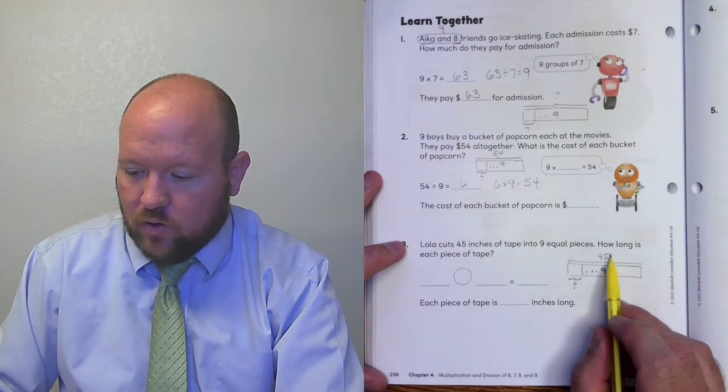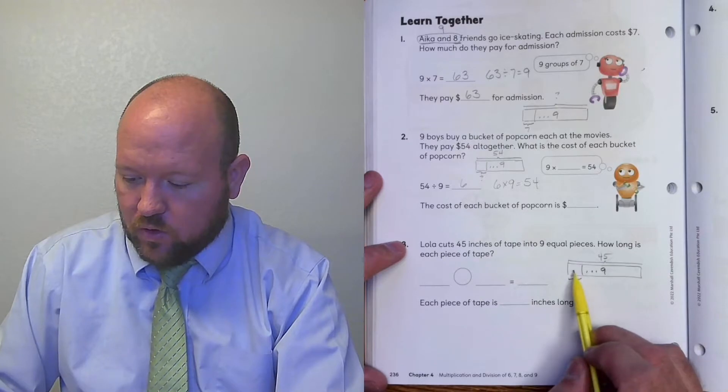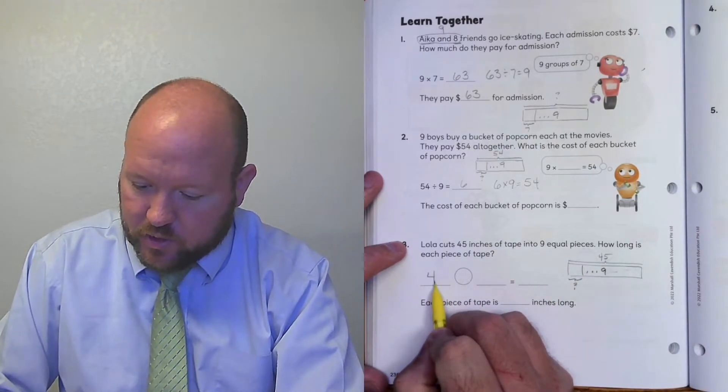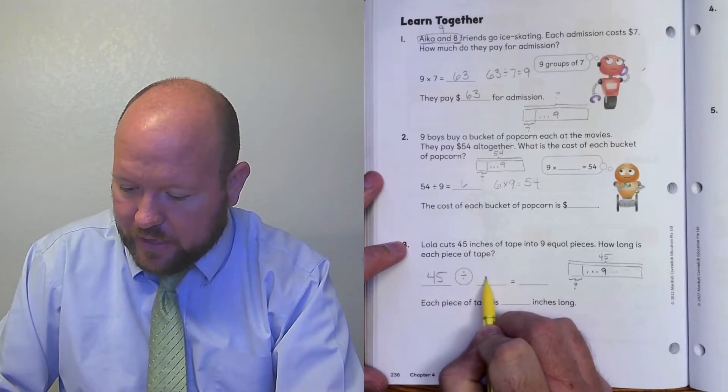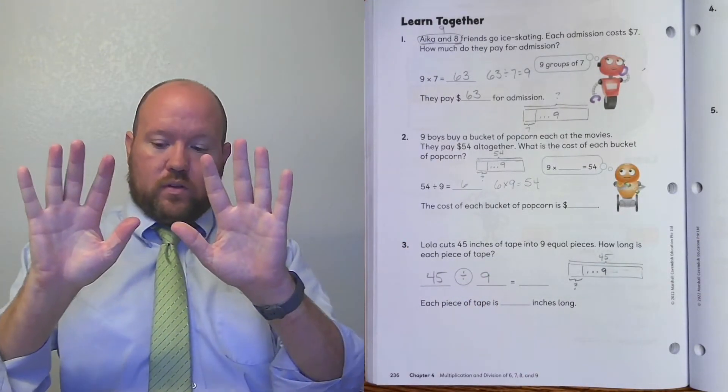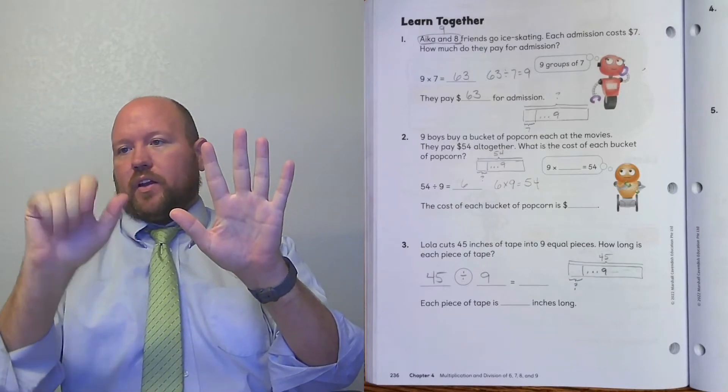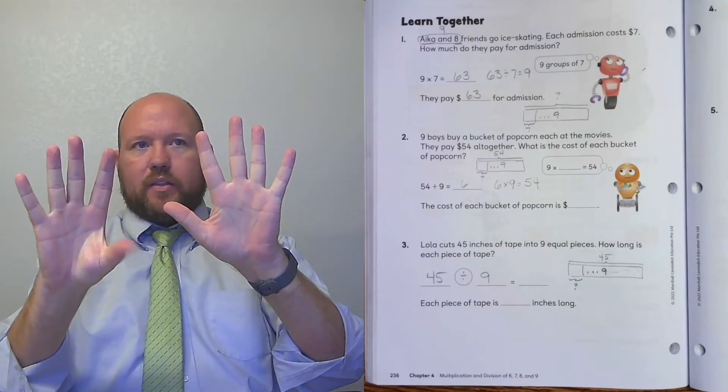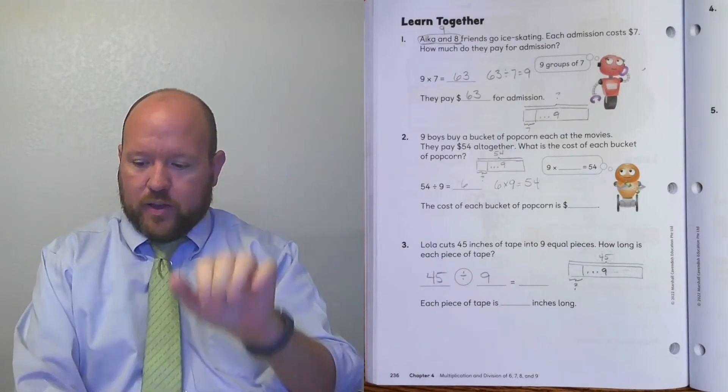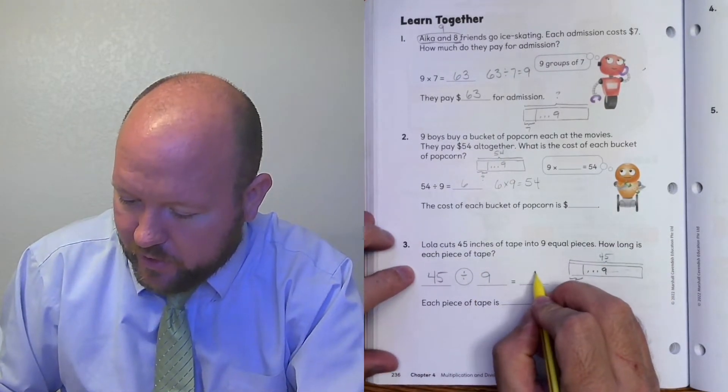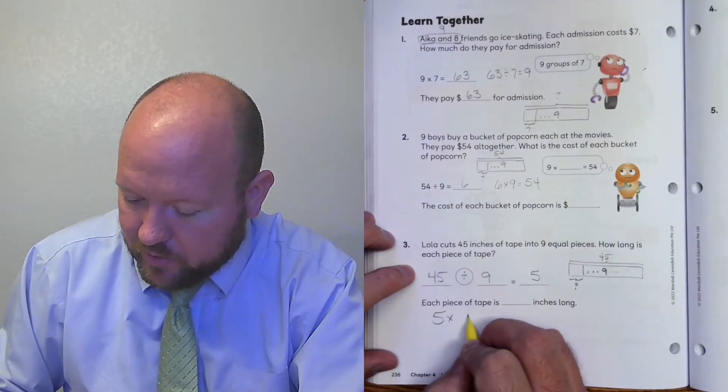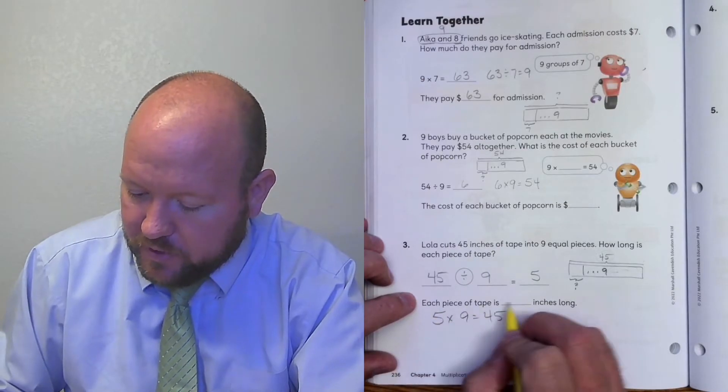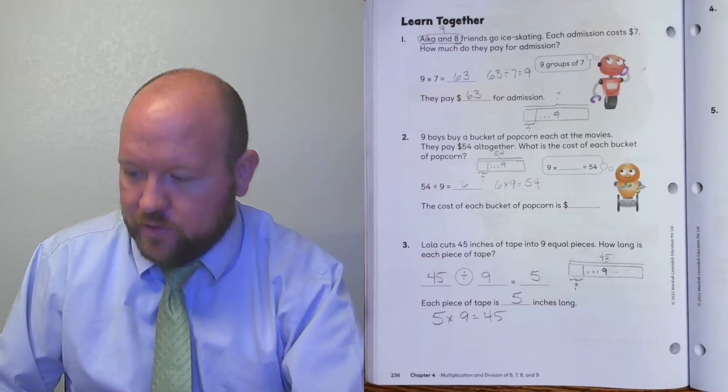To figure this out, whenever we have the whole and we have either the number of groups or how much each group we're going to do is division. So we need 45 divided by 9. I have 45. So I need 4. So I put this finger down. To get 45, what finger do I put down? I put down the 5th finger. So 45 divided by 9 is 5. And that's true because 5 times 9 equals 45. So each piece of tape is 5 inches long.